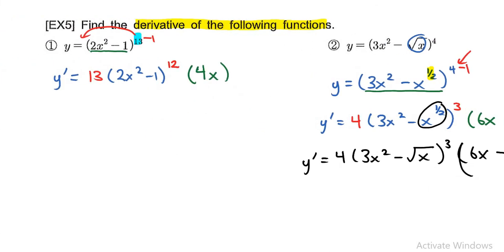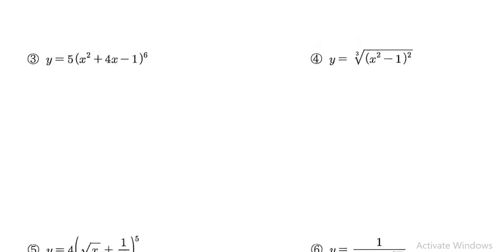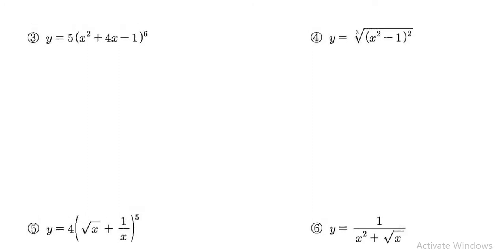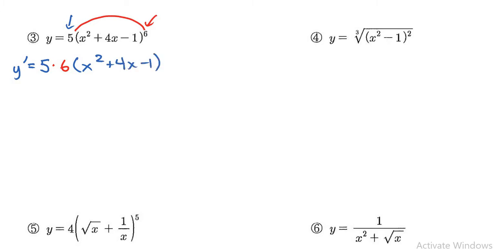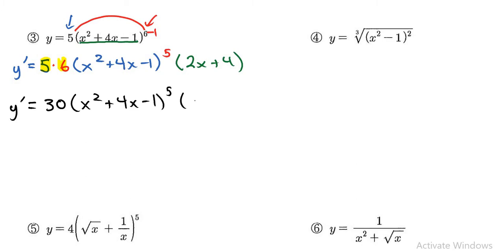For question number 3, I need to take the derivative. There's a power here, so y prime equals — the constant tags along — and the 6 comes to the front. It'll be 6 times x squared plus 4x minus 1 to the power of 5, then the chain rule gives the derivative of the inside as 2x plus 4. The last thing I'll do is multiply 5 and 6 together to get 30. So the final answer is 30 times x squared plus 4x minus 1 to the power of 5, times 2x plus 4.